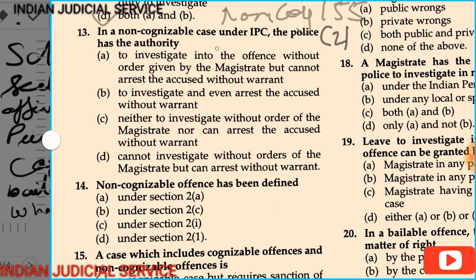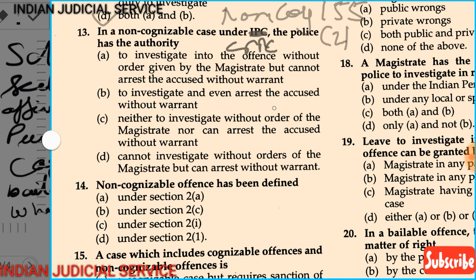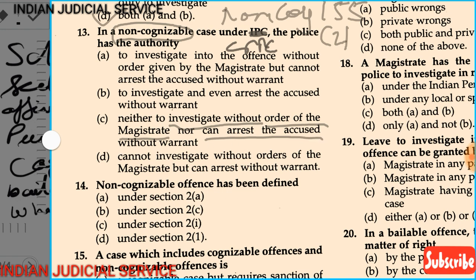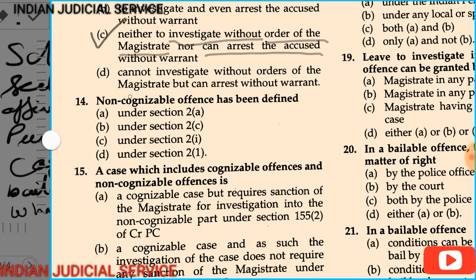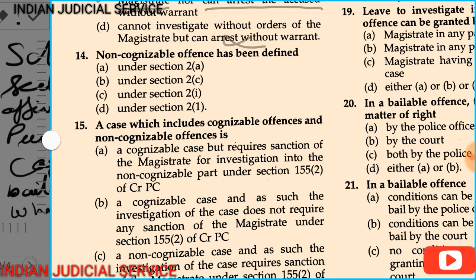Question 13: In a non-cognizable case under CrPC, the police officer has the authority to investigate without order of magistrate but cannot arrest the accused without warrant; or to investigate and even arrest without warrant; or neither to investigate without order of magistrate nor arrest without warrant. Option C is correct — in a non-cognizable case, the police can neither investigate without order of magistrate nor arrest without warrant.